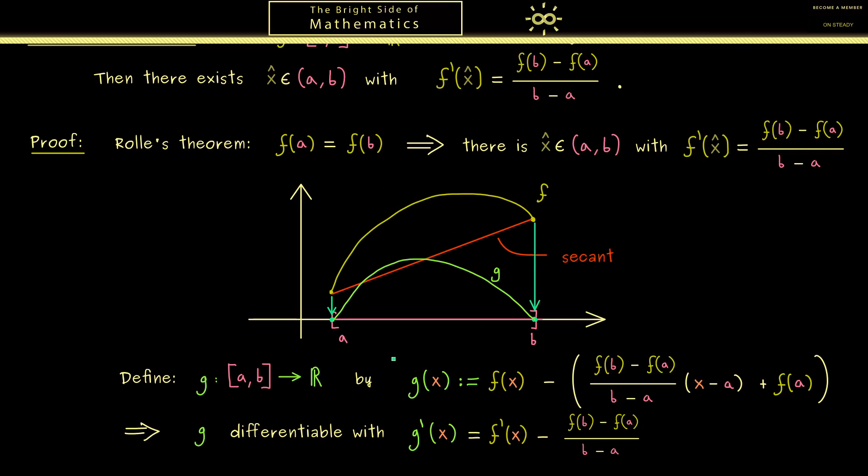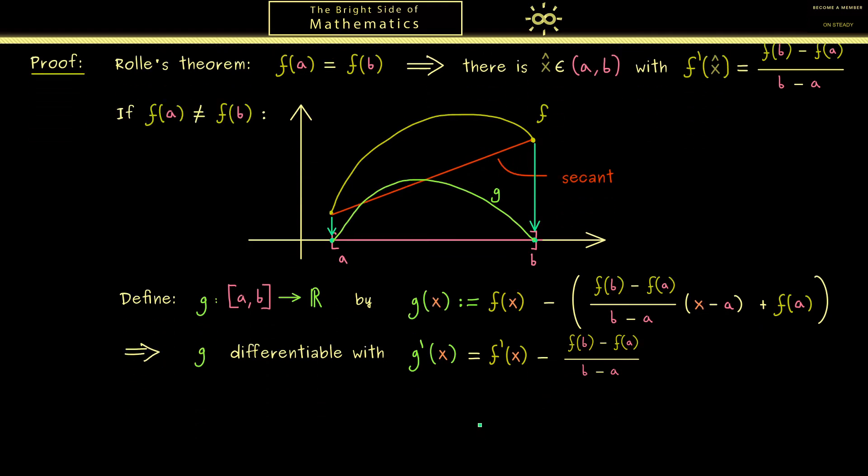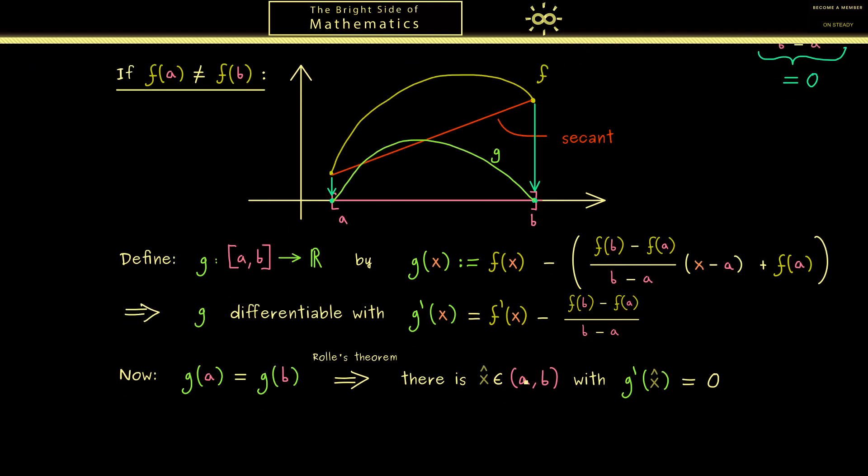Now the only thing that is left to do here is to apply Rolle's theorem. Please recall before we could use it in the case that the left value is equal to the right value. And then we found a middle point such that the derivative is 0 there. However now we are in the case that f(a) is not equal to f(b). But we shifted the whole problem such that g fulfills what we want. If you don't believe it put a and b into the definition and you see it. Hence now we can apply Rolle's theorem and find a point x hat where the derivative is 0. However vanishing derivative for g means that this expression is equal to 0. So we simply bring f' to the other side. So not so surprising we found our mean value theorem. And indeed this is the whole proof.